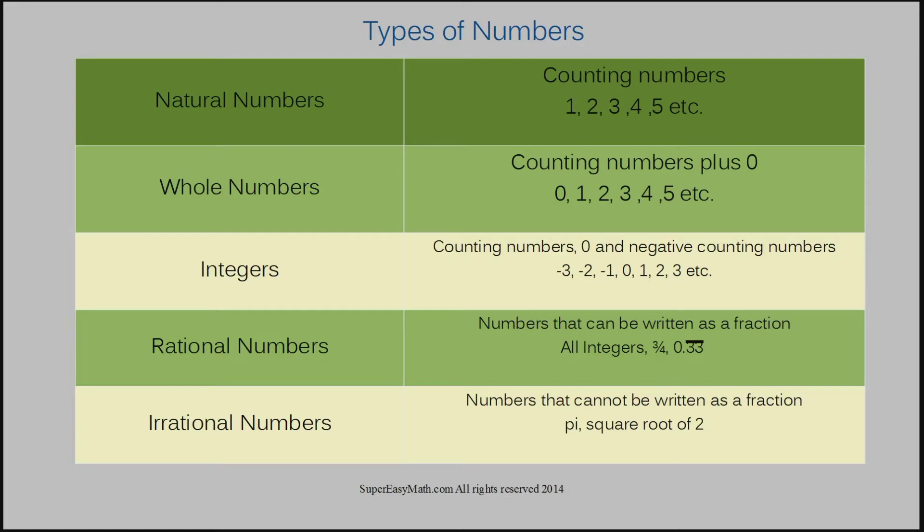The first type of number is a natural number and we call it a natural number because it's literally the numbers that you learn when you're a baby to count. So they're the counting numbers: one, two, three, four, five, six, seven. All of those numbers are natural numbers. They're the counting numbers.